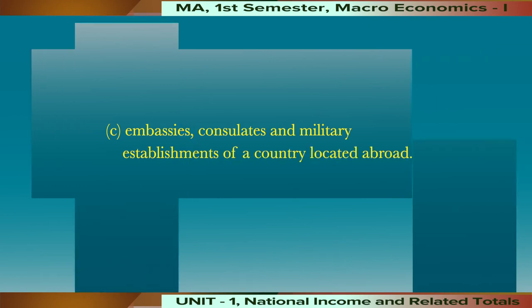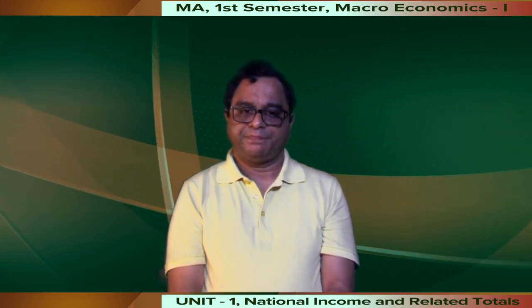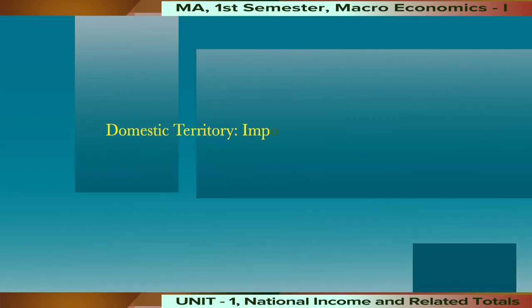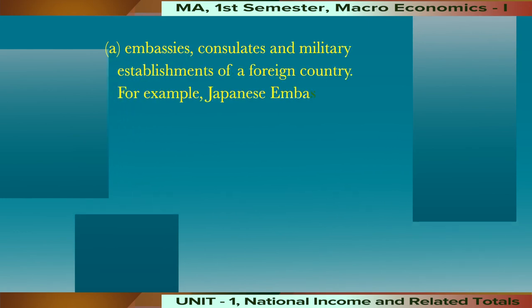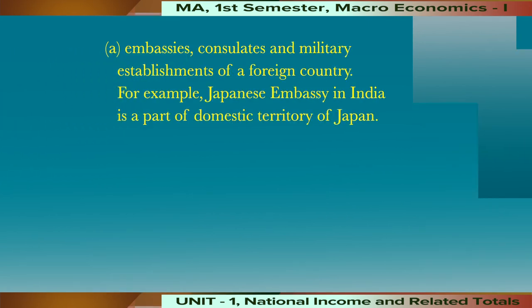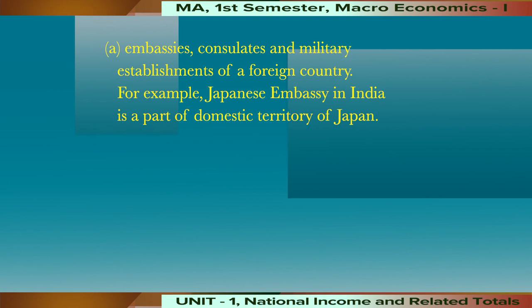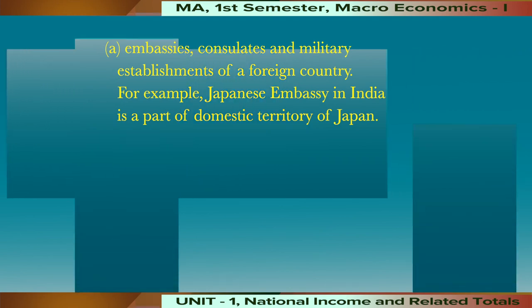Third, embassies, consulates, and military establishments of a country located abroad — for example, the Indian embassy in Russia is a part of the domestic territory of India. A consulate is an office or building used by a consul, an officer commissioned by a government to reside in a foreign country to promote the interests of the country to which he belongs. Important exclusions from the term domestic territory include: first, embassies, consulates, and military establishments of a foreign country — for example, Japan's embassy in India is a part of the domestic territory of Japan.